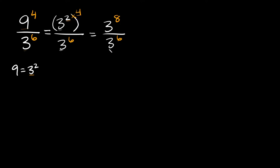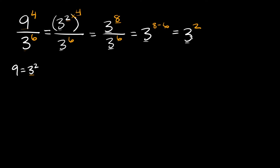We have the same base, so in order to divide these two — we have a 3 here and a 3 here — you just keep the 3 and subtract the exponents. The one on top you always write first, so we have 8 minus 6, which equals 2. So this is going to be equal to 3 raised to the 2nd power, which is the same thing as 3 squared, which is the same thing as 9. Either one of those answers would work.